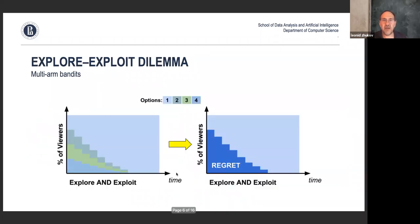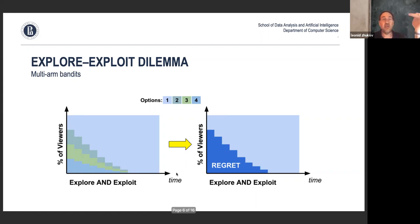That's the essence of dynamically adjusting allocation. If the best option — say the light blue one — slowly pushes out all other options, the regret, the lost opportunity, is much less. So this is a much more preferred version of testing.